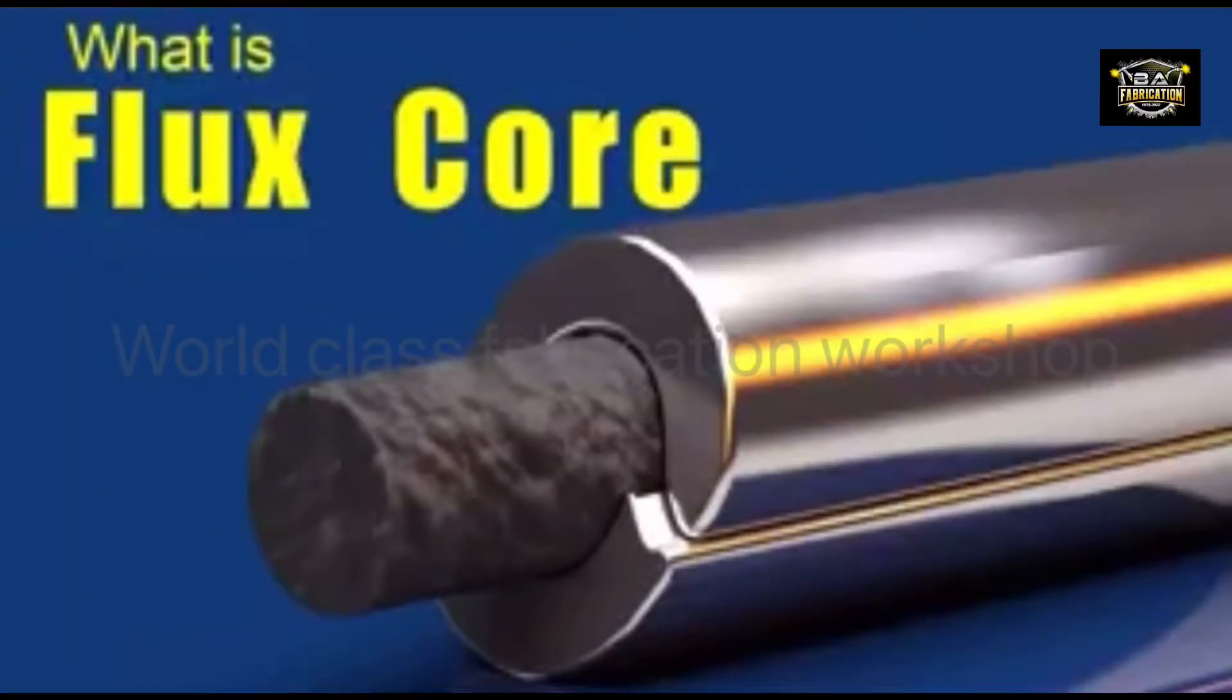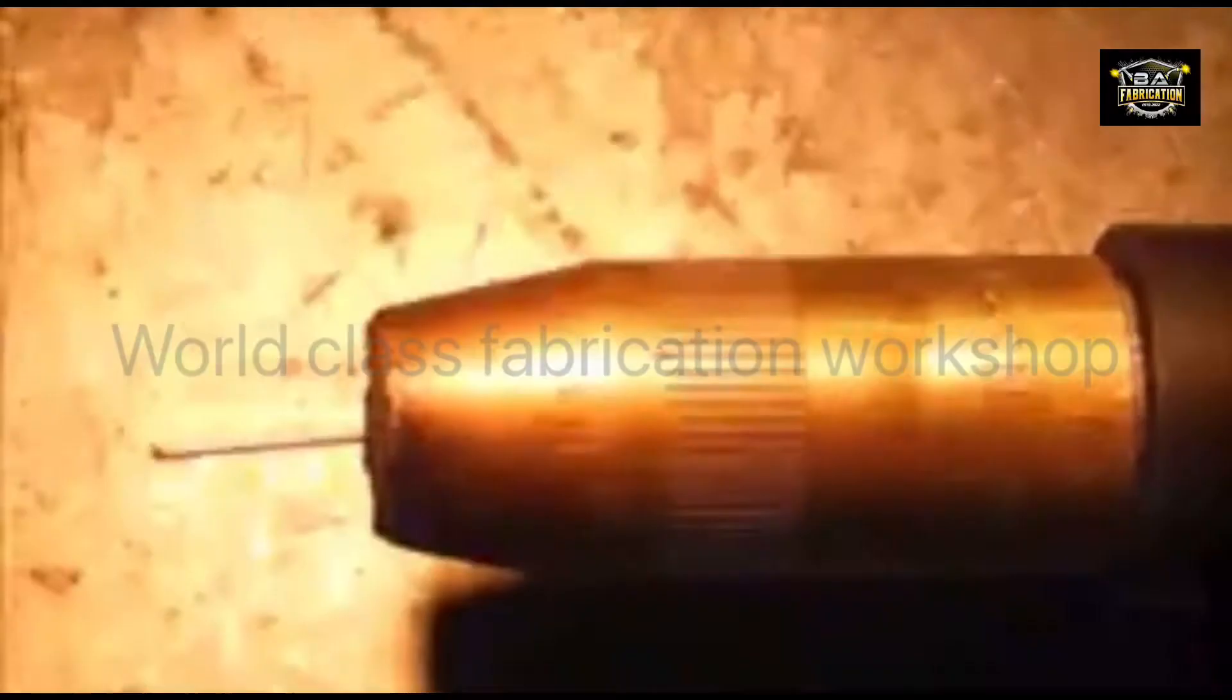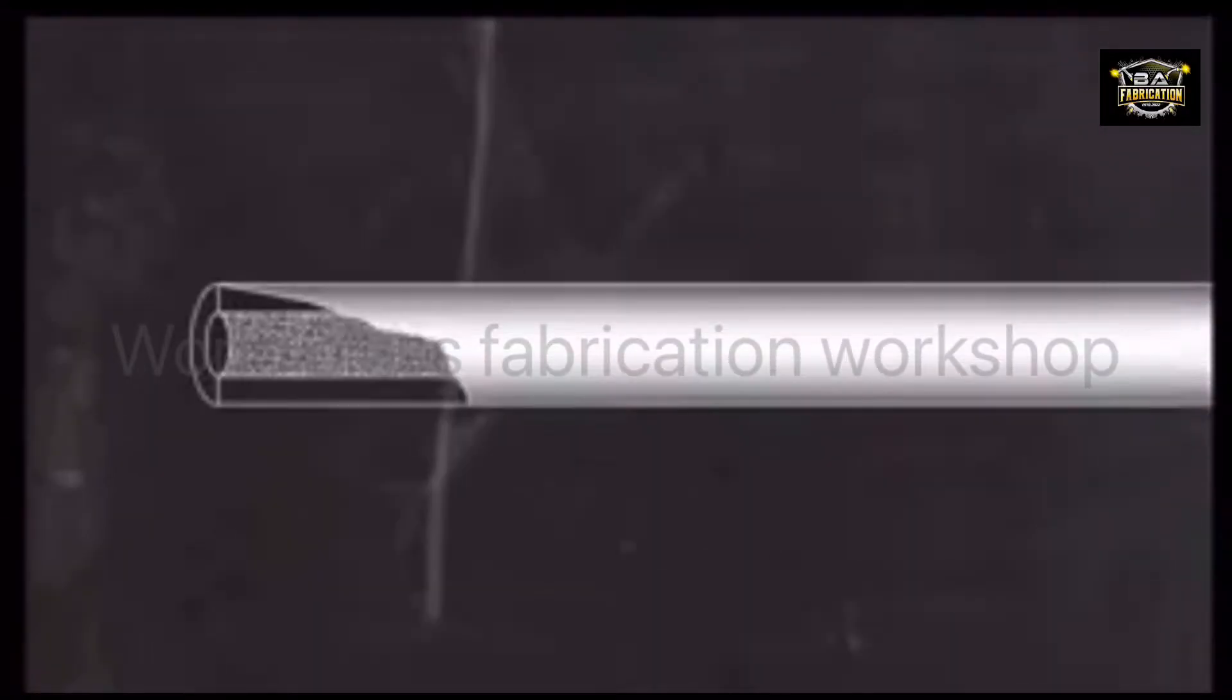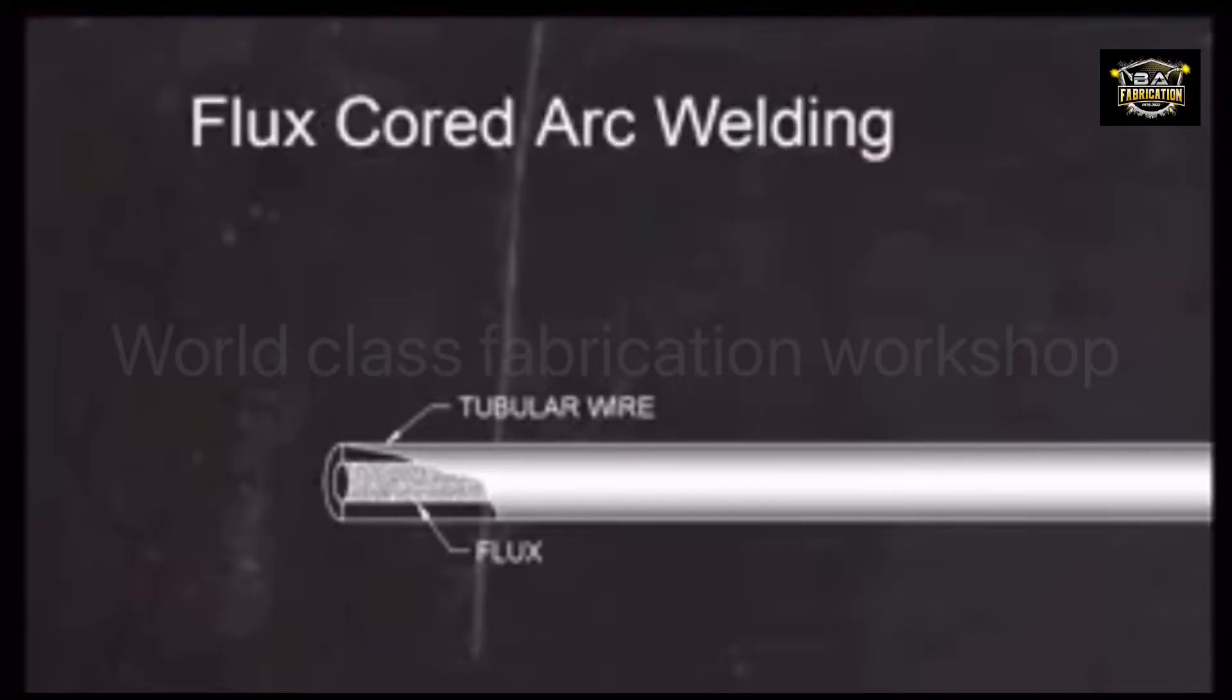What is flux-core welding? Flux-core is an arc welding process that uses a tubular wire electrode with a flux-filled inner core. The American Welding Society calls this process flux-cored arc welding, or FCAW.